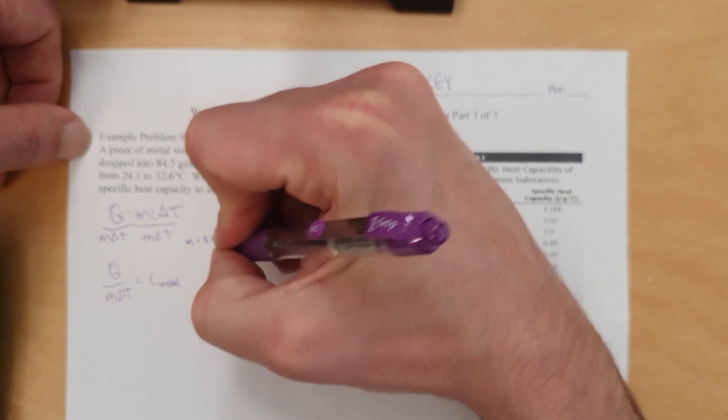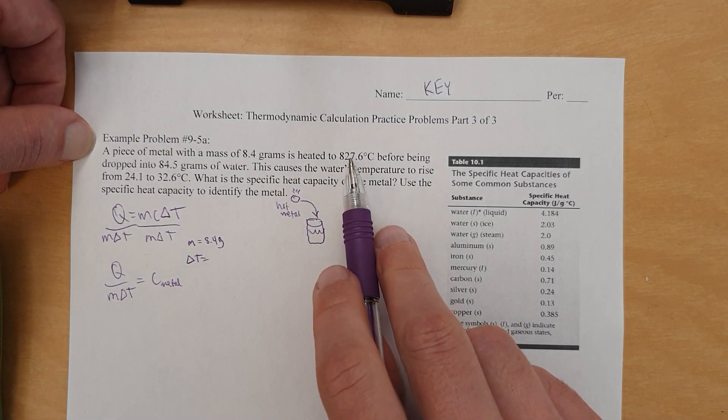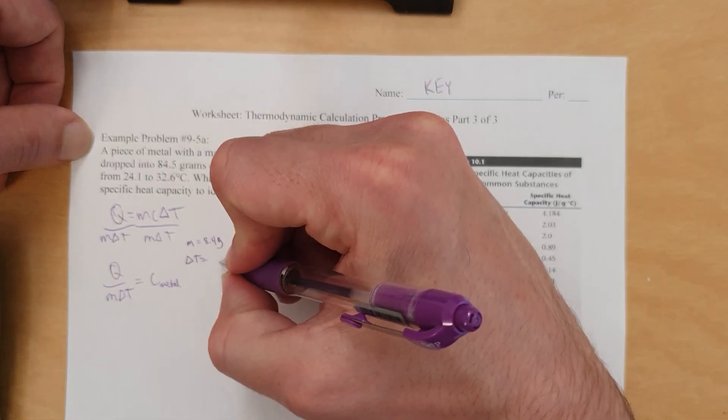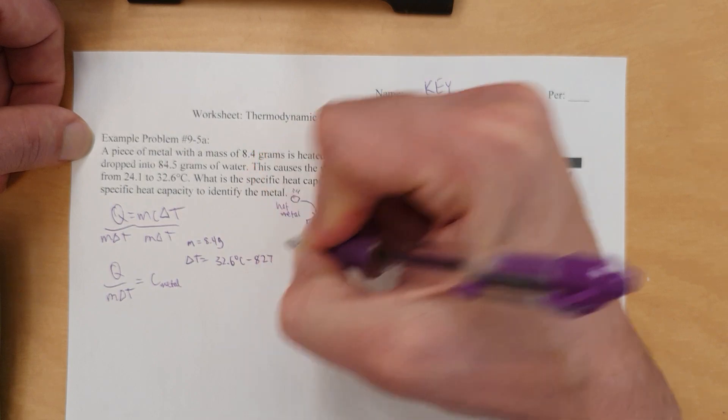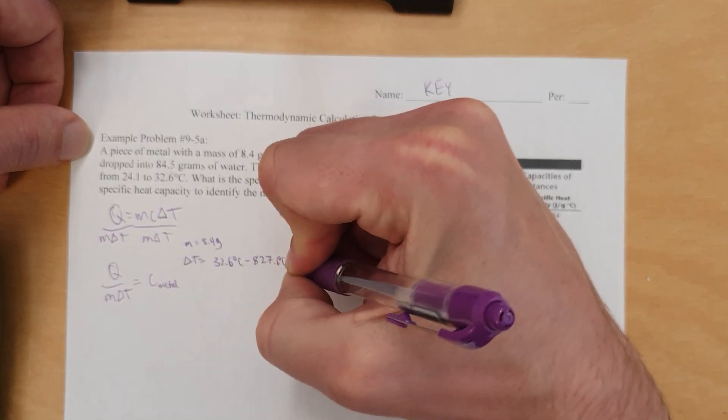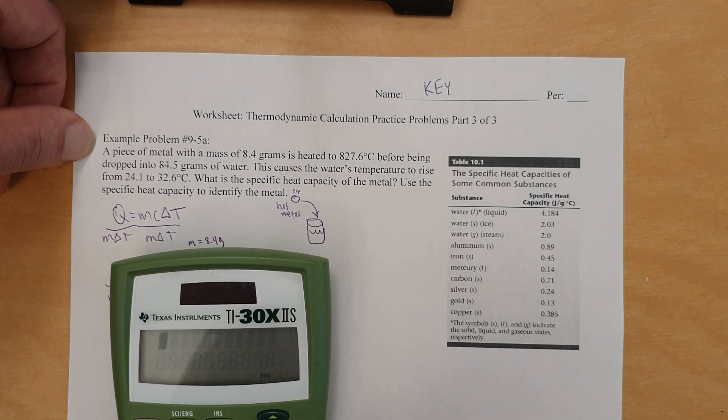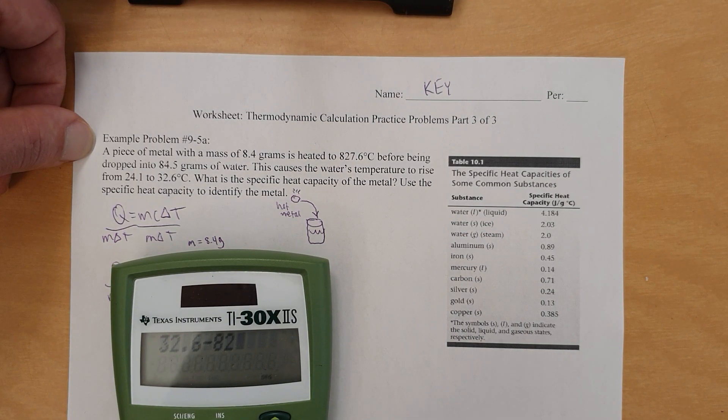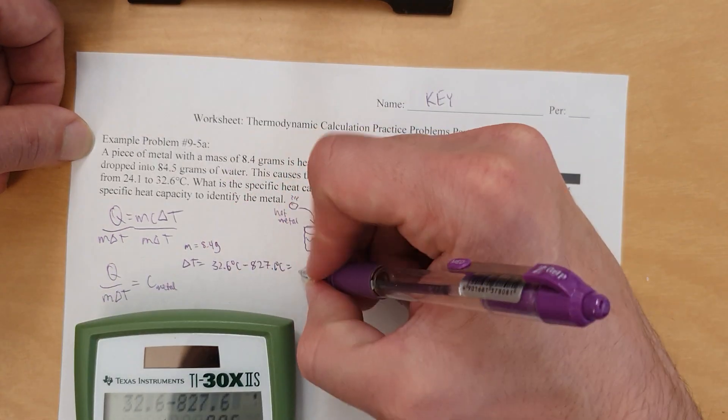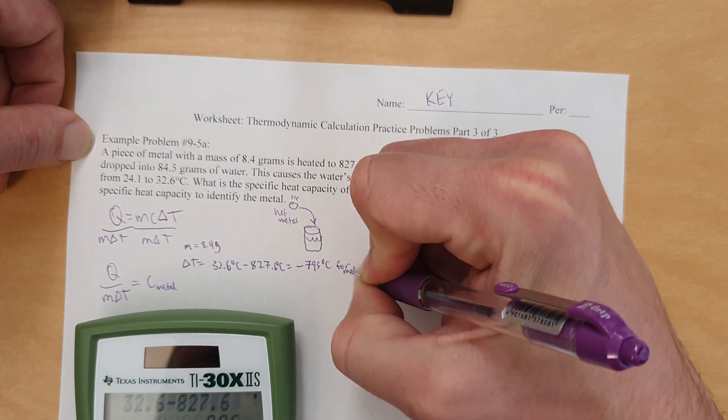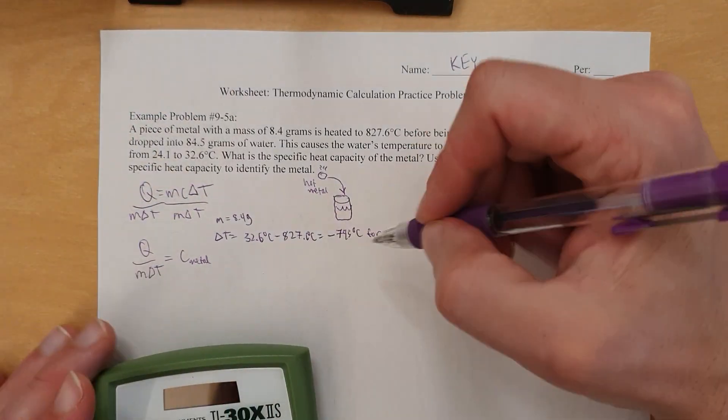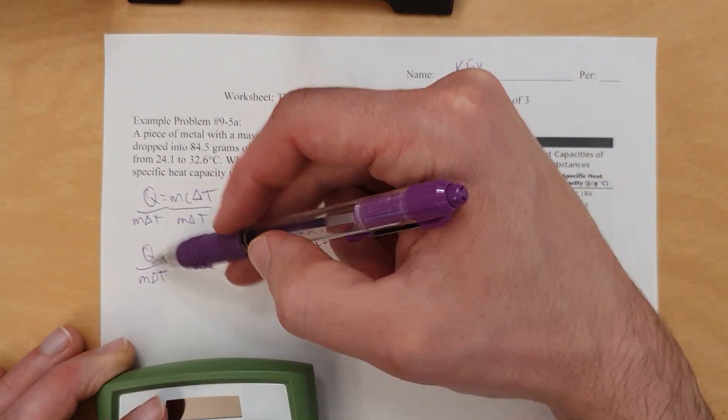Maybe I'll pause that a second and go back and do that. But for the metal, the mass is, right here, 8.4 grams, and the delta T is negative because the metal dropped from being really hot to not so hot anymore. So that's 32.6 degrees Celsius minus 827.6 degrees Celsius. And so delta T is negative 795 degrees Celsius for metal. So, okay, it's always good to set aside the information we need for this, but we still need Q.